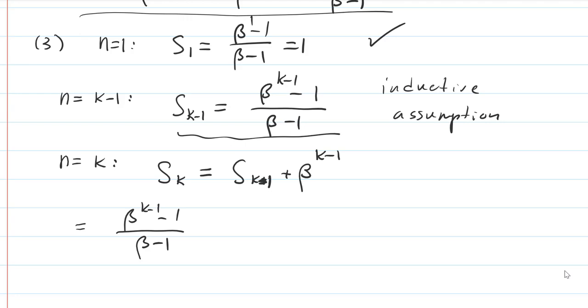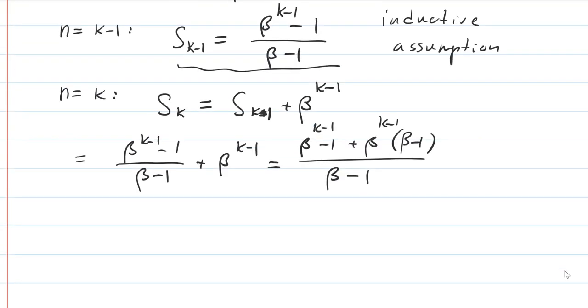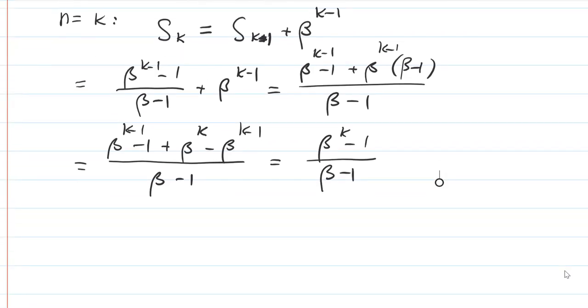We already have the starting point. This is the initial step, the first one. And then we have beta to the k minus 1. We need to again simplify this to see if the final step is correct. Beta to the k minus 1 minus 1 plus beta to the k minus 1 multiplied by beta minus 1 using the common denominator. And then just do the algebra carefully. And then we have this multiplied out minus beta to the k minus 1. And then we see exactly what we have, what we wanted to have.